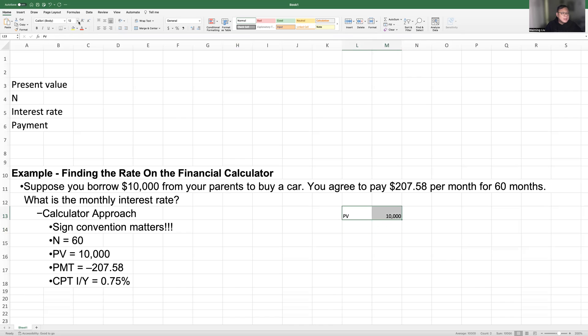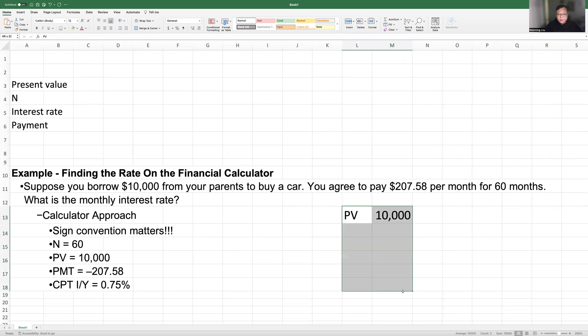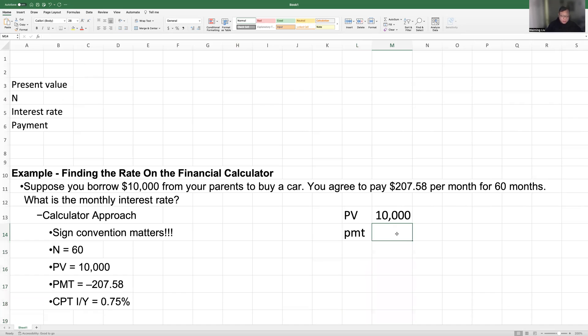And now you agree to pay this amount of money per month. So your payment is $207.58. But this time you pay your parents, right?